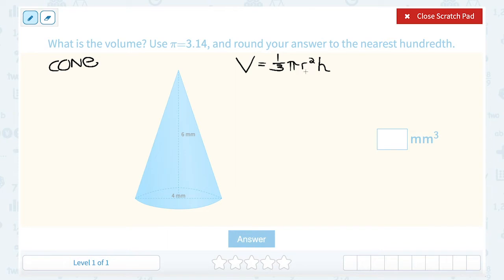And then from here, I need to know that in this formula, r always stands for the radius of the base. And that h always stands for the height.